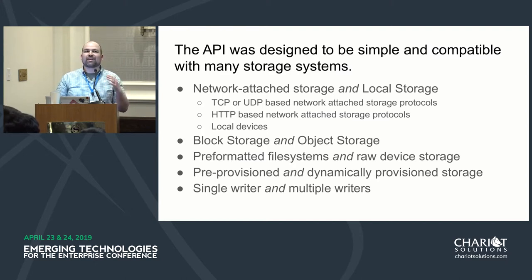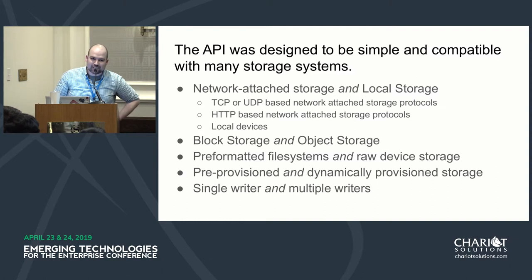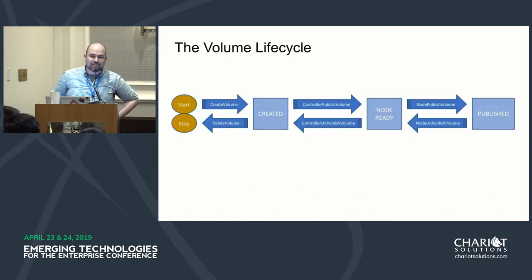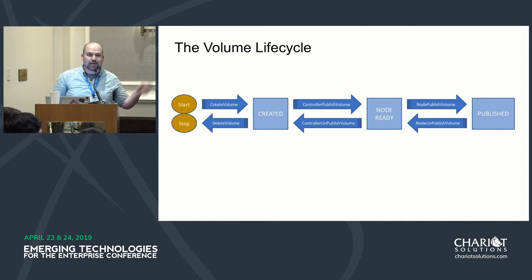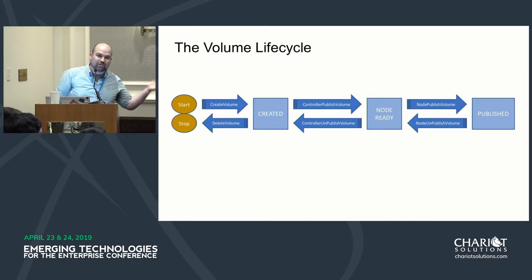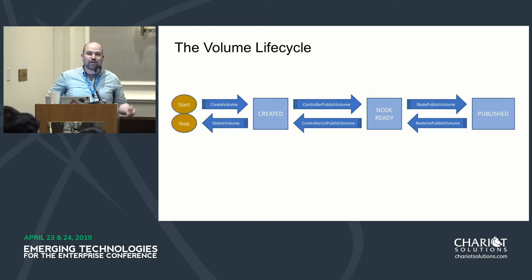You might think it's got to be so complex to do all these things, but it's very simple — this is the whole API. You create a volume, you publish the volume, you node publish the volume, and then you can go backwards: unpublish the volume, controller unpublish the volume, and then delete the volume.